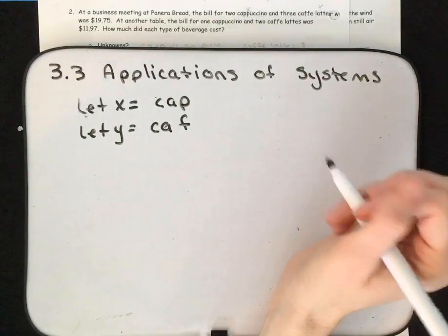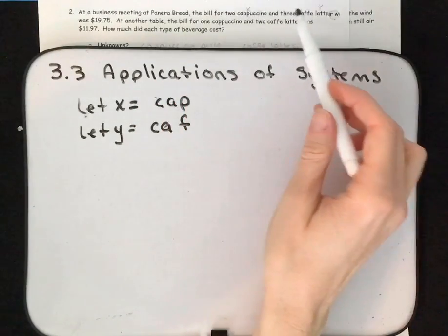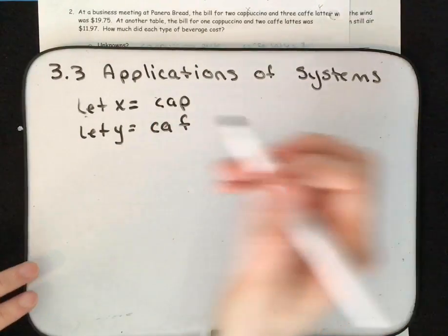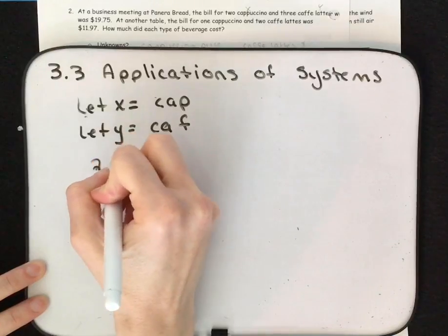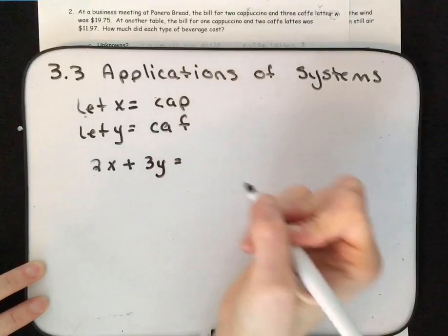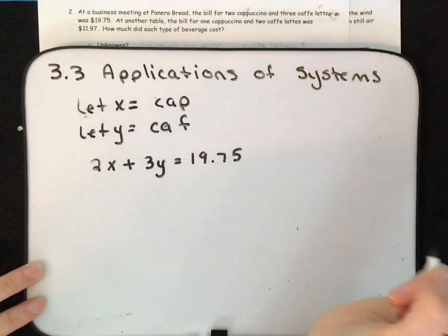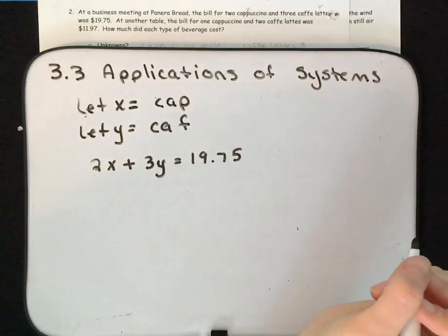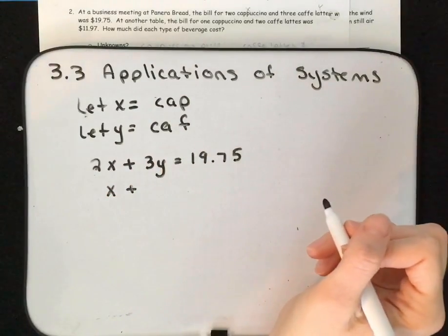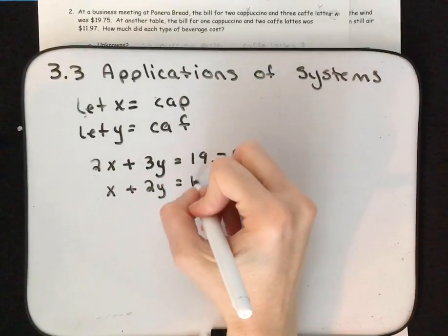Let's read again and see what we have. At a business meeting at Panera Bread, the bill for two cappuccinos and three cafe lattes was $19.75. We can write that as 2X plus 3Y equals $19.75. At another table, the bill for one cappuccino and two cafe lattes was $11.97, giving us X plus 2Y equals $11.97.